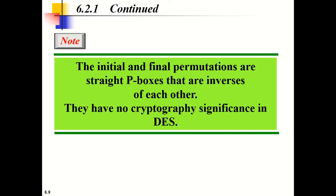These Initial and Final Permutations are straight P-boxes that are inverses of each other. They have no cryptographic significance in DES — they are keyless and predetermined. The reason they are included has not been revealed by the DES designers, but the idea is that these permutations are easy to implement on hardware chips with 8-bit interfaces, which were popular when DES was invented.